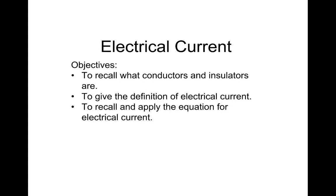This is GCSE Electricity Lesson 1 and we'll start with electrical current. The objectives are to recall what conductors and insulators are, to give a definition of electrical current, and to recall and apply the equation for electrical current.